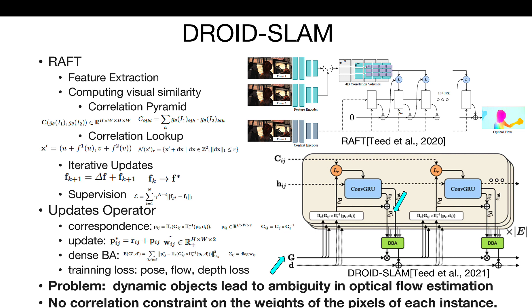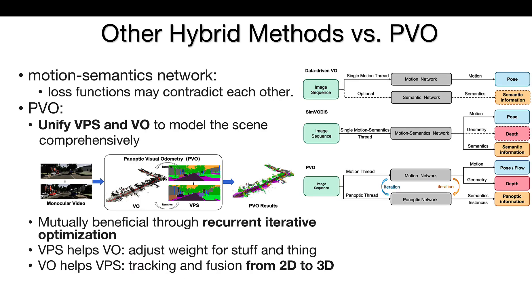However, dynamic objects may lead to ambiguity in optical flow estimation, and there is no correlation constraint on the weights of the pixels of each instance. Some hybrid methods train motion semantics networks in a multitask manner, and the loss functions may contradict each other. We unify VO and VPS to model the scene comprehensively and make them mutually reinforcing by recurrent iterative optimization. Our insight is that VPS can help VO by adjusting the weight of DroidSLAM with panoptic information, and VO can also help VPS by tracking and fusing segmentation from 2D to 3D.